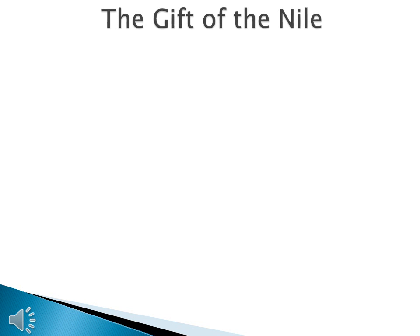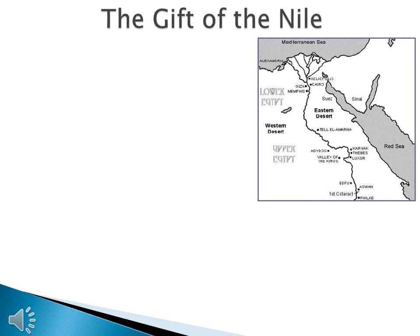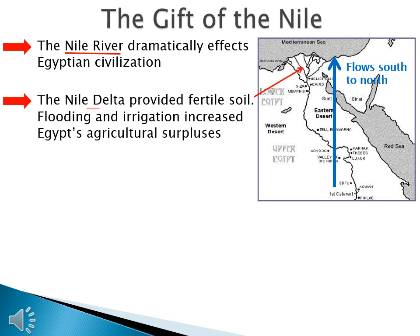Because of Egypt's geography, there is no ancient civilization without the Nile River. In fact, we call it the gift of the Nile because the Nile River dramatically affects Egyptian civilization. It's also one of a few rivers that flows from south to north, and this causes some geographic confusion within Egypt. The Nile Delta provided fertile soil — this is where the river empties out into the Mediterranean Sea. All the material from the mountains comes down and lands here, providing fertile soil, flooding, and irrigation, all of which increases Egypt's agricultural surpluses, just like what happened in Mesopotamia.